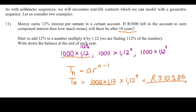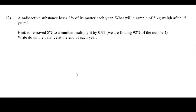Here's another example: a radioactive substance loses 8% of its matter each year. What will a sample of 5 kg weigh after 15 years? To remove 8% we multiply by 0.92, because we are finding 92% of that number.